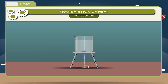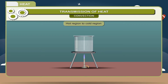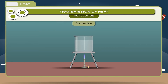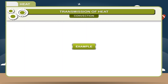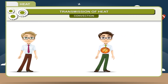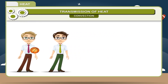Convection is the process of transfer of heat in which particles pick up heat energy from the source, become light, and move up. The actual movement of particles from hot region to cold region takes place. The process of transfer of heat in fluids by the actual physical movement of medium particles is called convection. Example: a person himself goes and hands over the ball to the bowler.